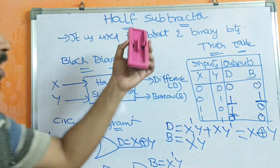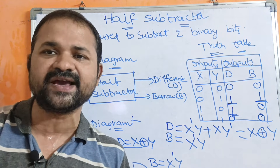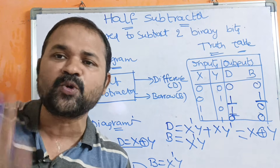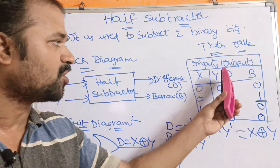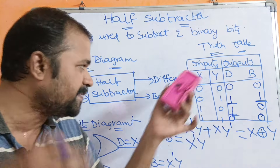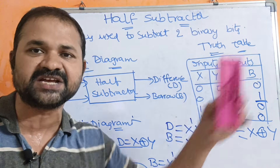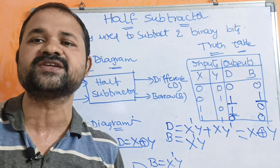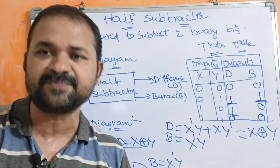So this is about the half subtractor. The half subtractor is called a combinational circuit. A combinational circuit means the output depends only on the present inputs. Here, Difference and Borrow depend only on the present inputs X and Y, which is why we call the half subtractor a combinational circuit.